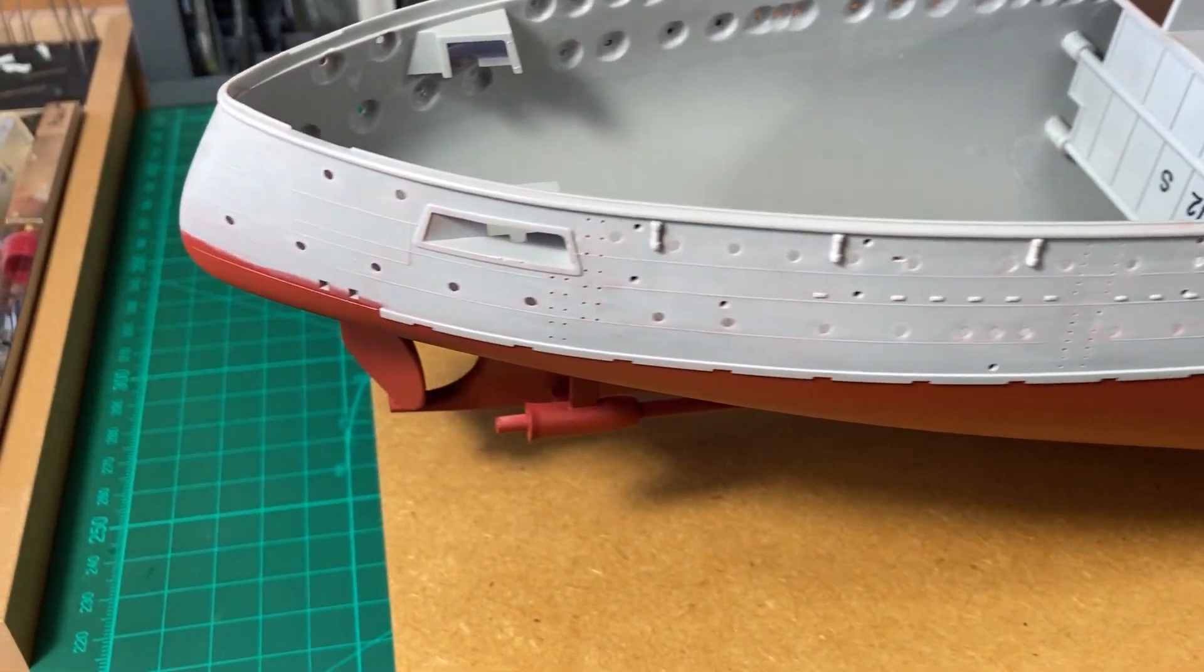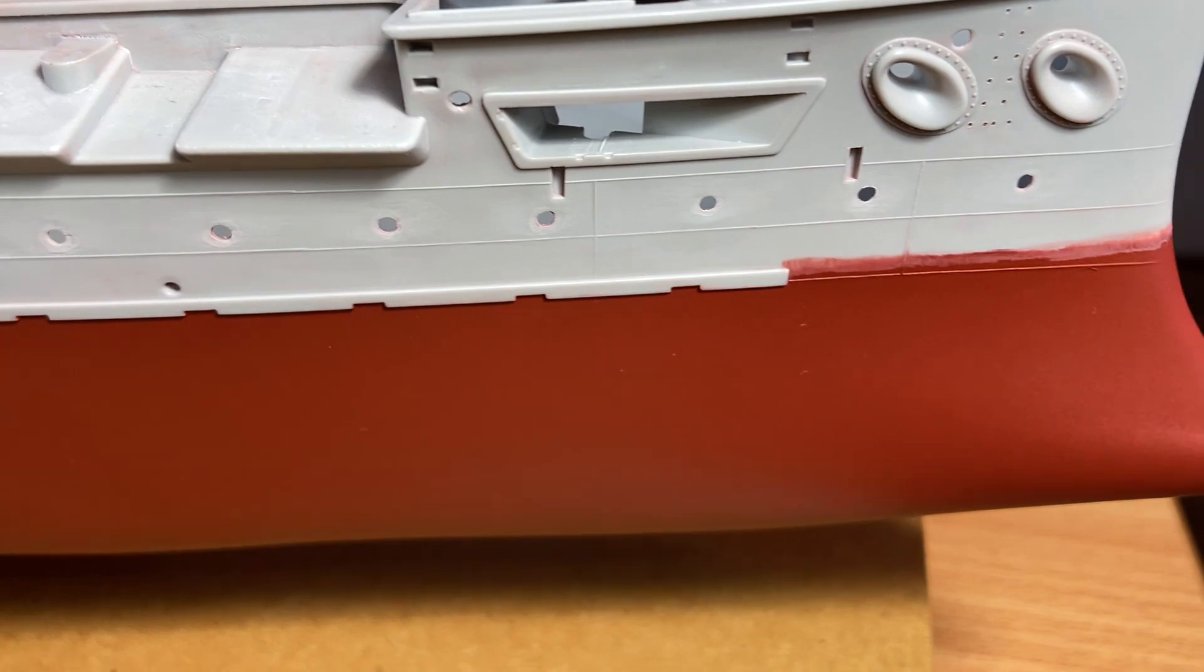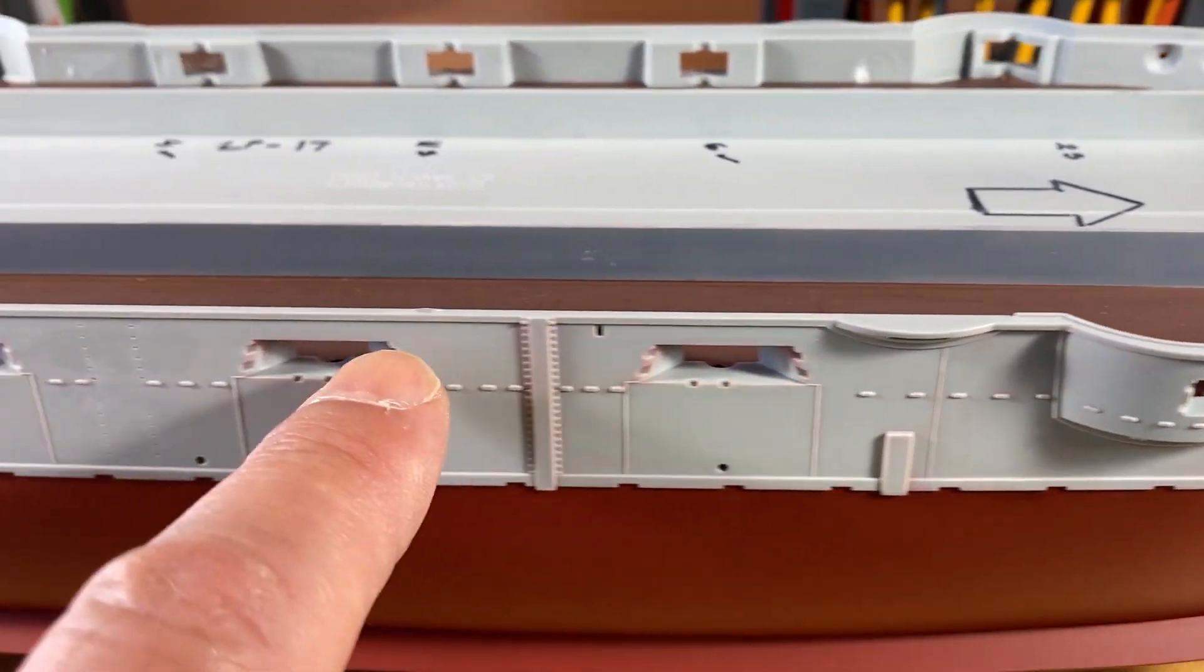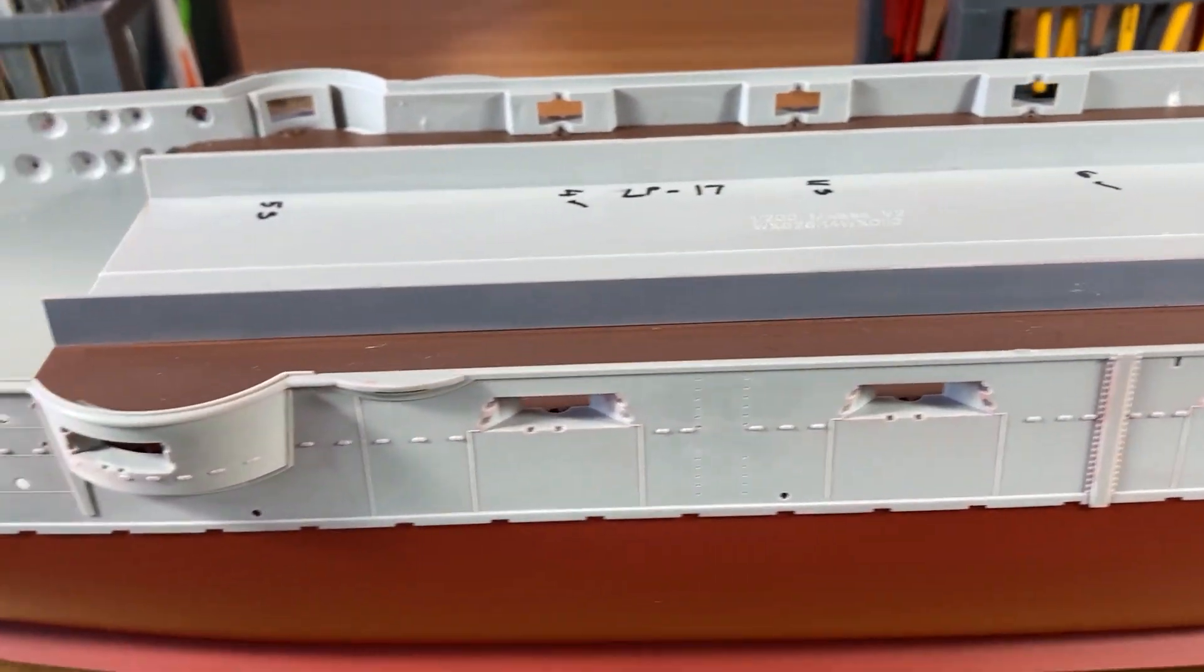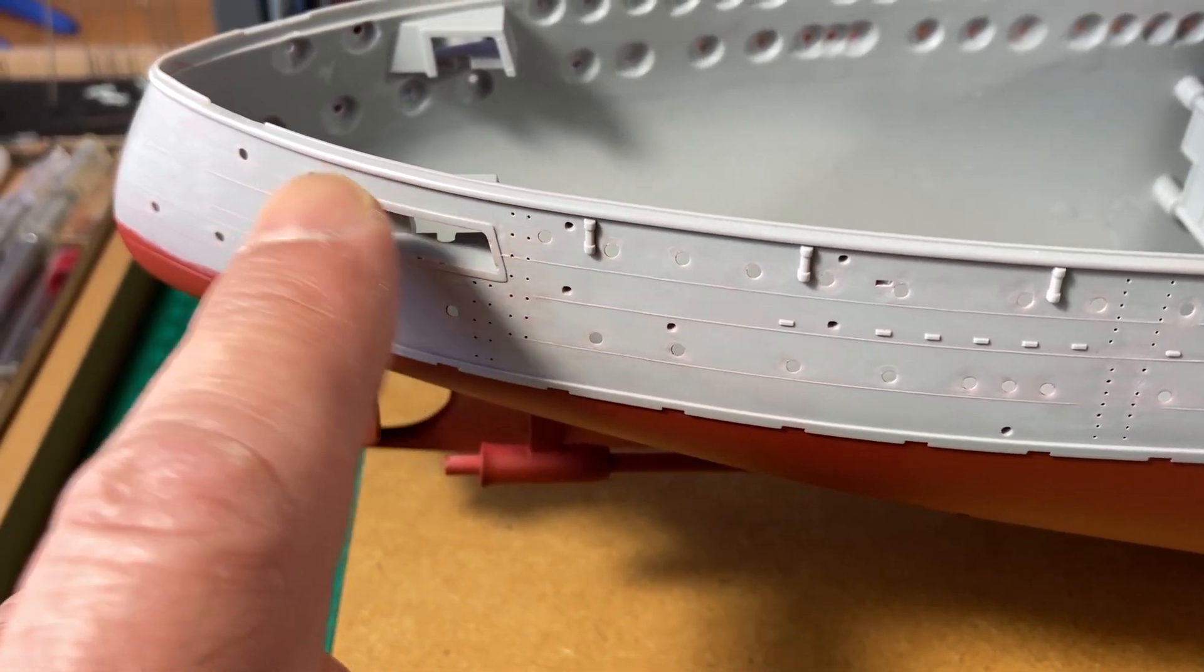Okay, welcome back. What we're going to do next is install the three-inch guns in the stern and bow, and also the six-inch guns along the side of the hull. That will allow us to put in the main decks.